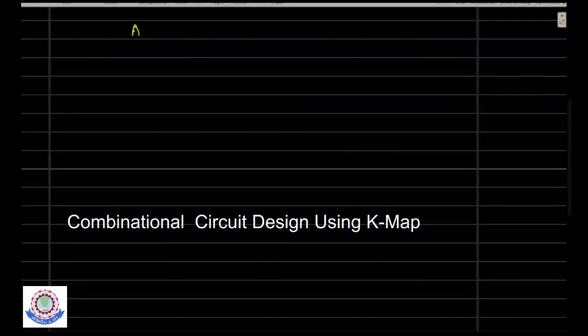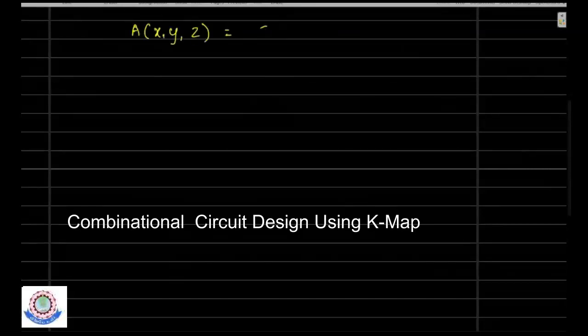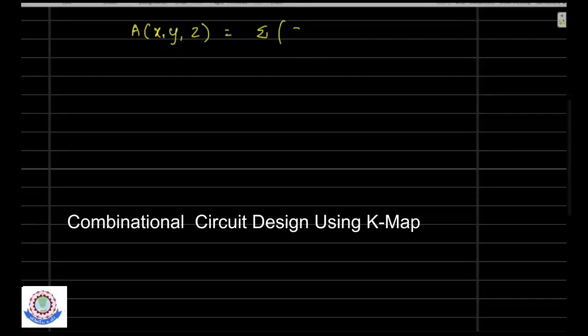A of xyz is equal to sigma of 3, 5, 6, 7. This is the problem we are trying to solve.